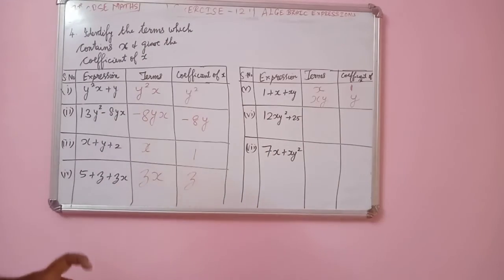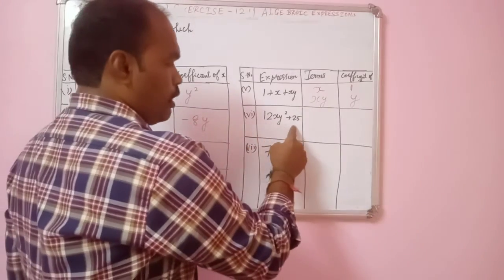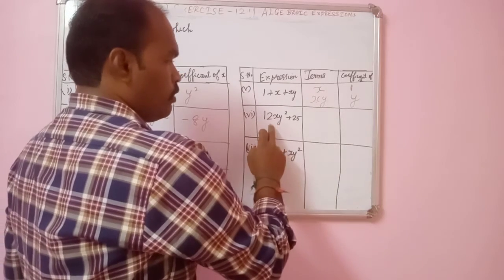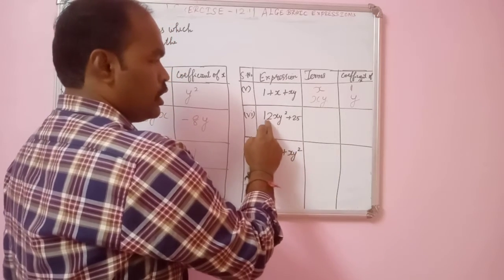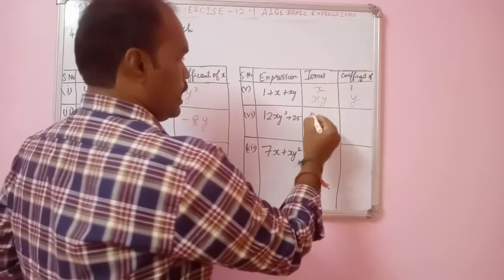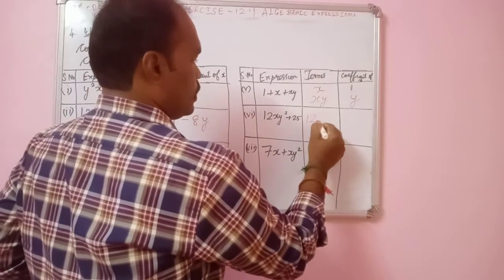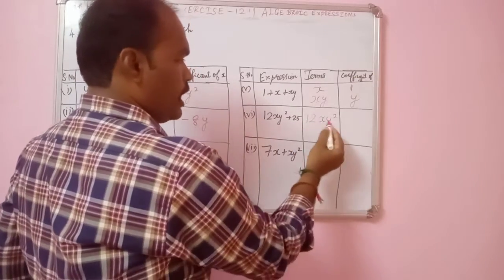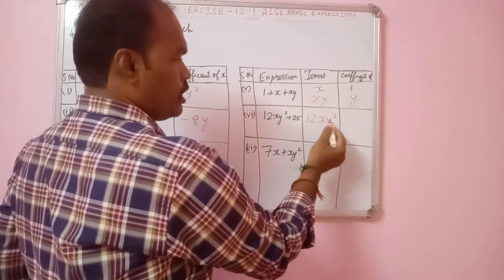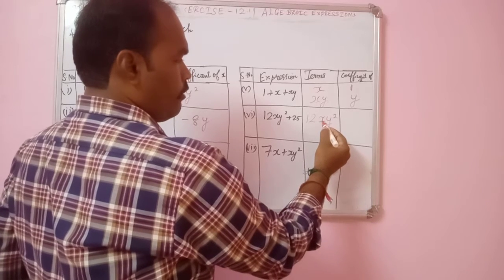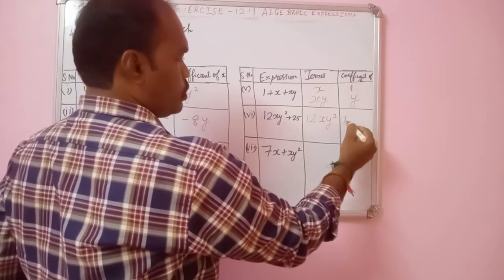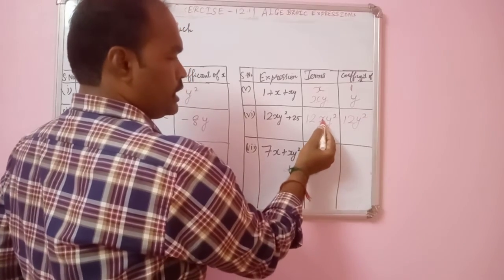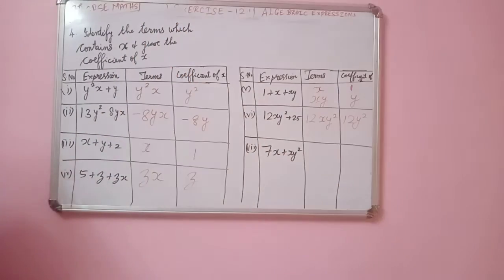Next, for the expression 2x plus y², which contains x: 2x plus y² — the term containing x is 2x. The coefficient of x is 12y², because 6 is there, so 12y².